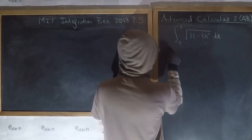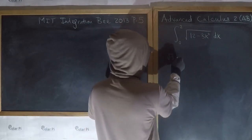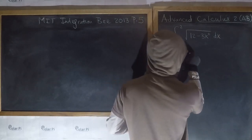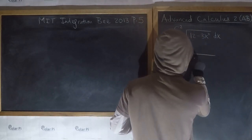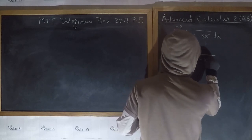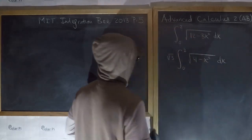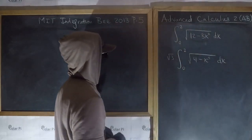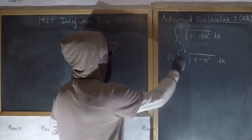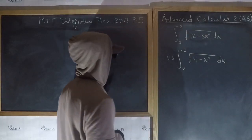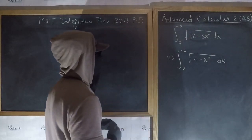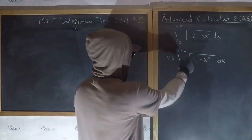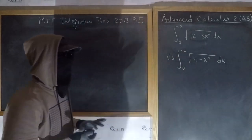First, we can write the given integral as square root of three times the integral from zero to two of square root of four minus x squared dx. You should know how I got the square root of three — three is a common factor. After factoring out a three from inside the square root, it becomes square root of three in front of the integral.